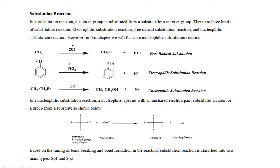These are examples of substitution reactions. When a free radical attacks on the substrate, then the reaction is known as free-radical substitution reaction. For example, in methane, the Cl radical ion replaces a hydrogen atom and it forms methyl chloride.